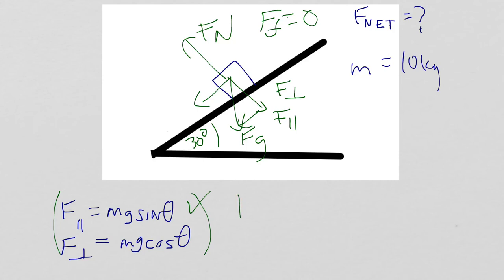what is F parallel? F parallel is Mg, which is the mass of the object, the 10 kilograms, times 9.81 meters per second squared. And I need the sine of 30 degrees.